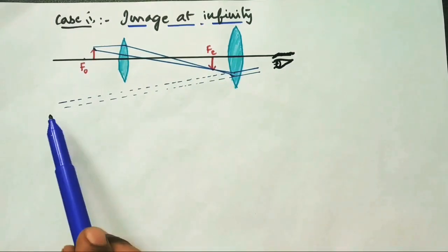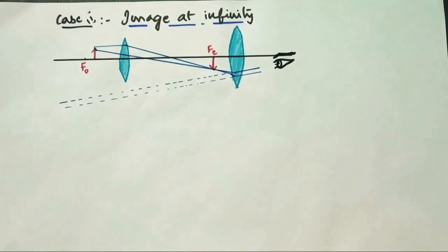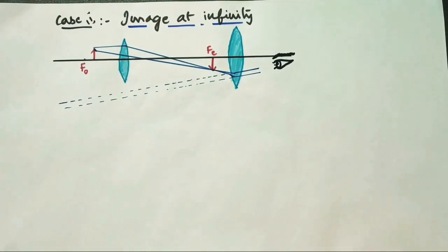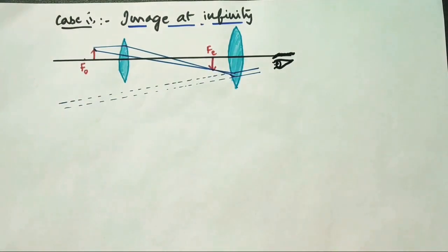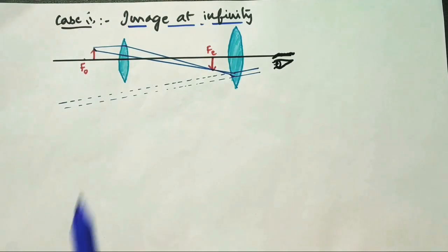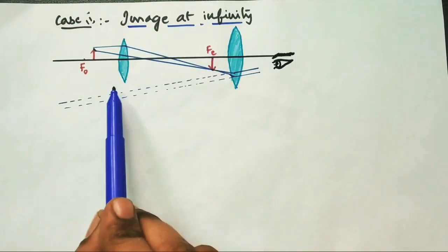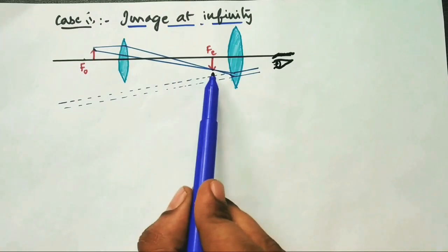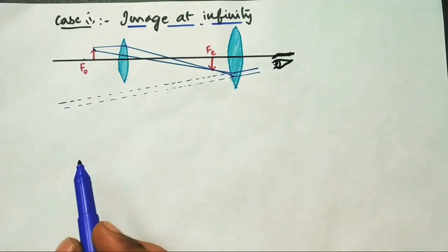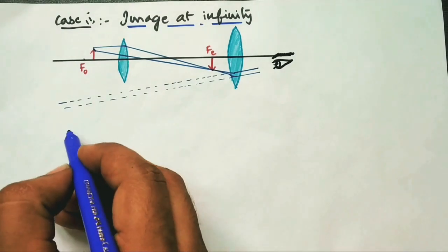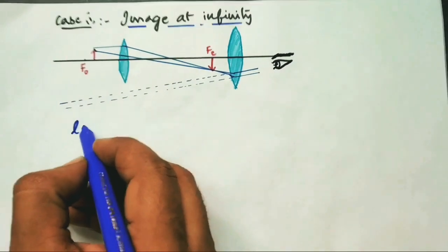Let us see the first case in the compound microscope: when the image forms at infinity. In order to get the image at infinity, the first image should be formed exactly at the focus of the eyepiece. The first image is formed and the final image is formed at infinity, as shown by the dotted line in the figure, which is the result of image formation by the second lens.